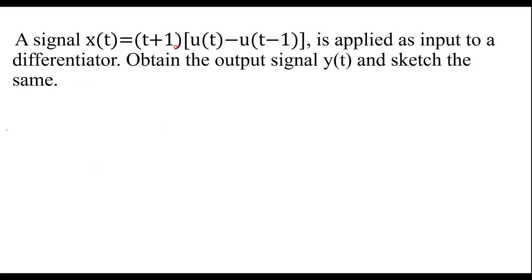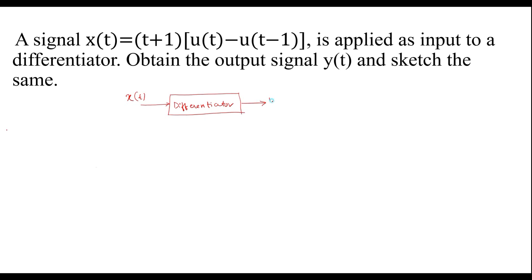A signal x of t equal to (t plus 1)(u of t minus u of t minus 1) is applied as input to a differentiator. Obtain the output signal y of t and sketch the same. Here the input applied to the differentiator is x of t, and the output is y of t. Therefore, y of t is equal to d by dt of x of t.